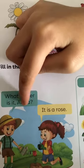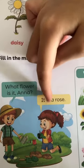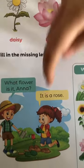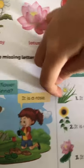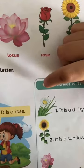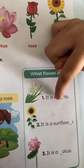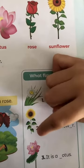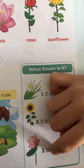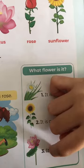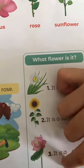N. What flower is there? N is a rose. What flower is there? N is a, it's a daisy. It's a sunflower. It's a lotus.